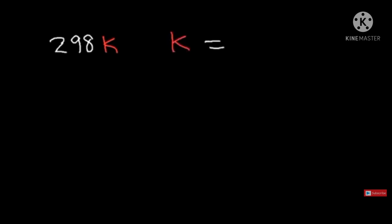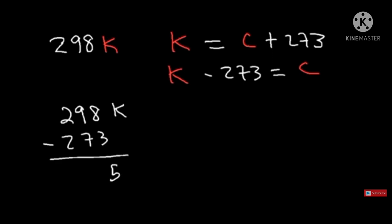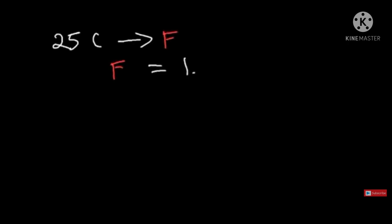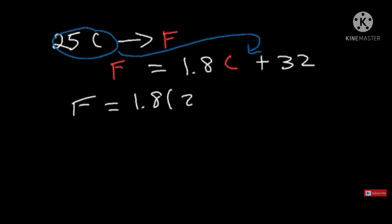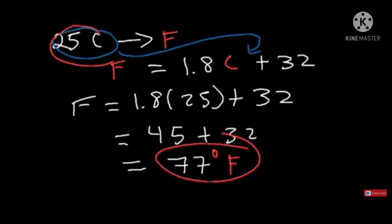Working backwards from 298 K: subtract 273 to get Celsius — 298 − 273 = 25°C. Then convert 25°C to Fahrenheit using F = 1.8C + 32: 1.8 times 25 is 45, plus 32 is 77°F. So 298 K equals 25°C equals 77°F.